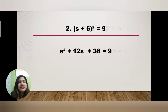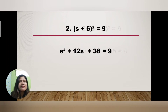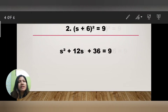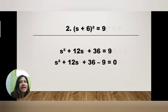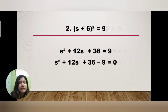2s times positive 6 is positive 12s — that's the middle term. Then square the last term: 6² = 36. So we have s² + 12s + 36 = 9. Next, transpose positive 9 to the left side: s² + 12s + 36 − 9.